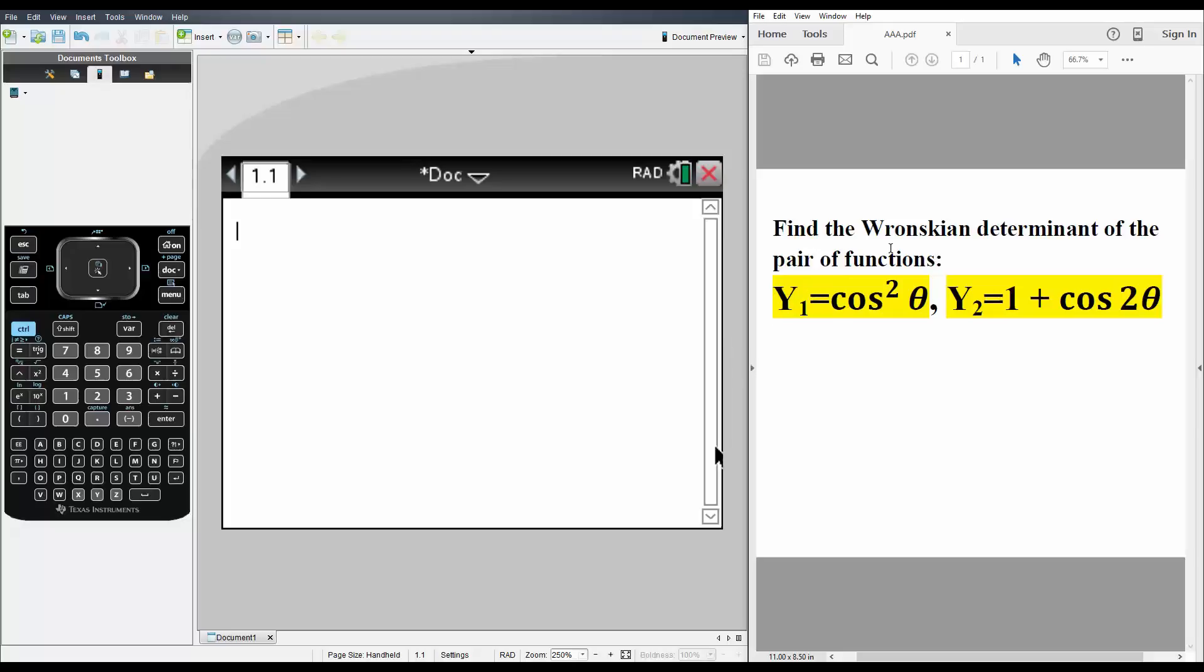In this video we want to find the Wronskian determinant of the pair of functions. We have Y1 equals cosine squared theta, and Y2 equals 1 plus cosine 2 theta. We'll solve this question using the TI-Inspire.